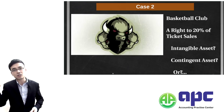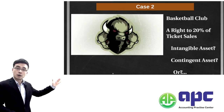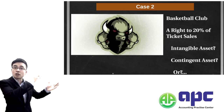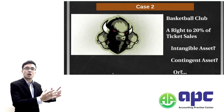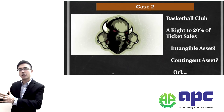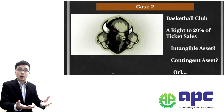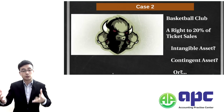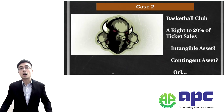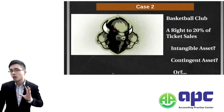We also have contingent assets according to IAS 37. A contingent asset means either we can get this asset or we can't. In this case — either we can get that 20% of sales if they sell, or we don't get it if they make no sales revenue at all.